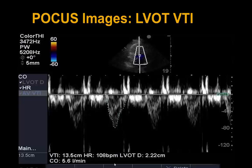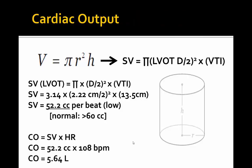We then input this into the calculation with a heart rate of 108 and an LVOT diameter of 2.22 centimeters, calculating a cardiac output of 5.6 liters per minute. The math shows that the stroke volume is only 52.2 cc per beat — below the normal of 60 cc per beat. The calculated cardiac output using stroke volume times heart rate equals 5.6 liters per minute.